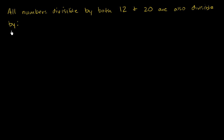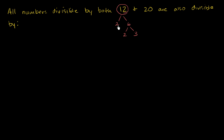The trick here is to realize that if a number is divisible by both 12 and 20, it has to be divisible by each of these numbers' prime factors. So let's take the prime factorization of 12. 12 is 2 times 6, and 6 is 2 times 3. So any number divisible by 12 needs to have 2 times 2 times 3 in its prime factorization.